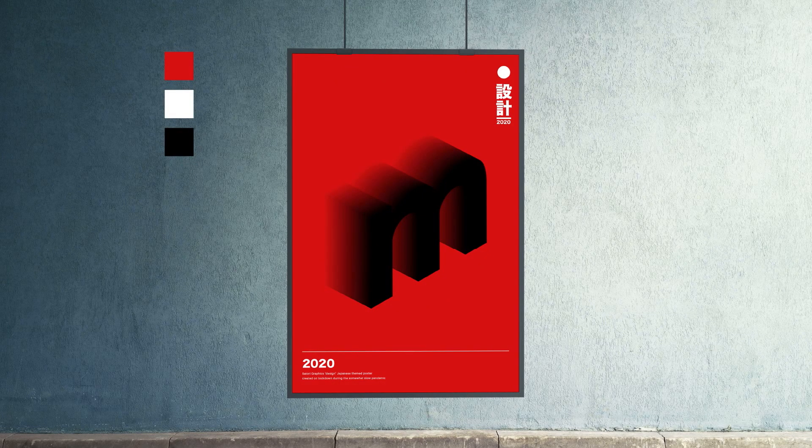Let's now deconstruct the poster and see why it actually works from a design point of view. It might seem randomly laid out, but if you understand graphic design principles it has quite a lot of thought put into it. Firstly, there are three colors that make up the design, and the focal point has its own unique color — the only element of that color — which helps it stand out.